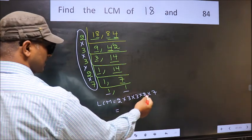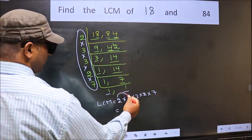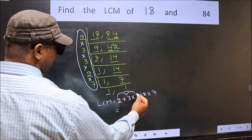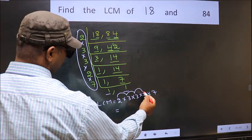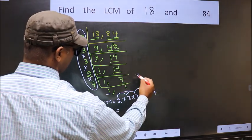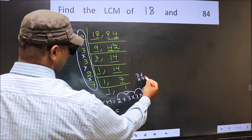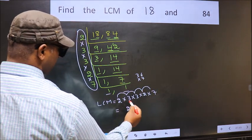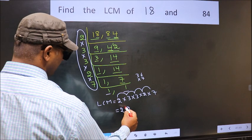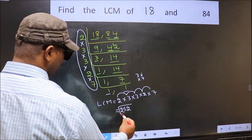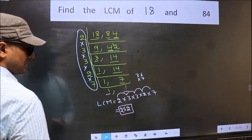So let us multiply these numbers. 2 into 3 is 6, into 3 is 18, into 2 is 36, into 7. 7 into 6 is 42. 2 is 4, 7 threes is 21 plus 4 is 25. So 252 is our LCM.